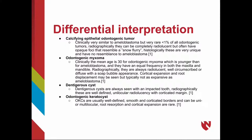A dentigerous cyst is always seen with an impacted tooth, and radiographically presents as a well-defined, unilocular radiolucency with corticated margins. Odontogenic keratocysts are usually well-defined and smooth with corticated borders, and can be uni- or multilocular. They sometimes show root resorption and cortical expansion, but these are rare.